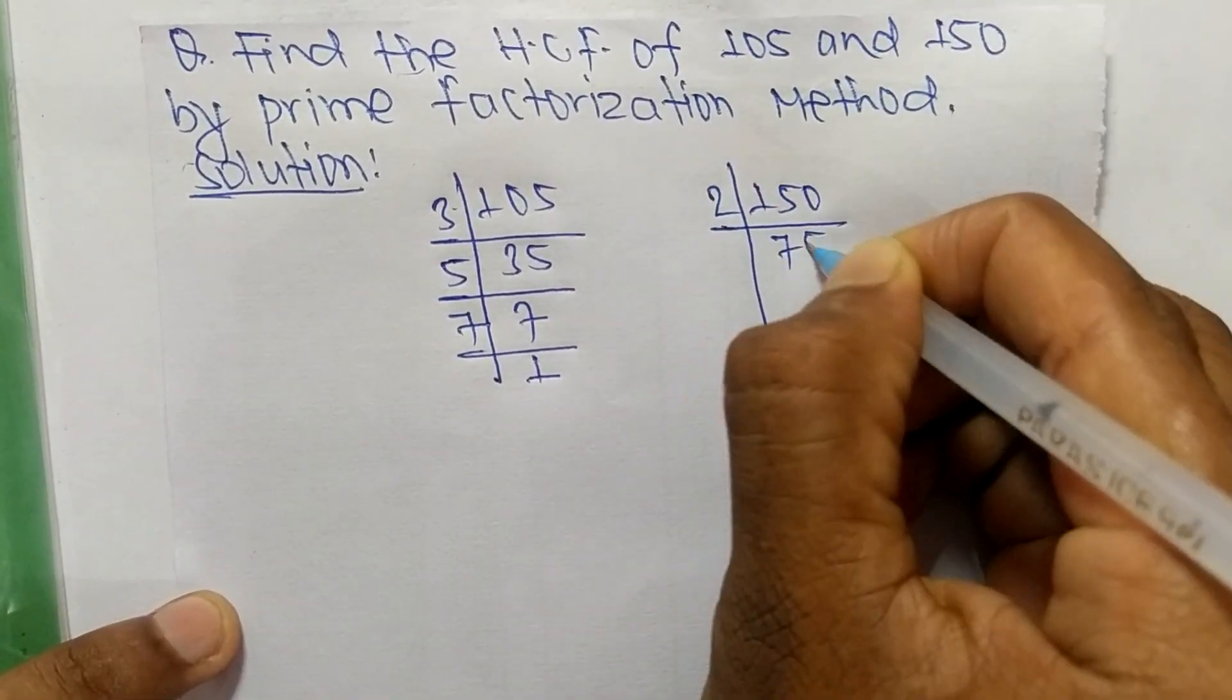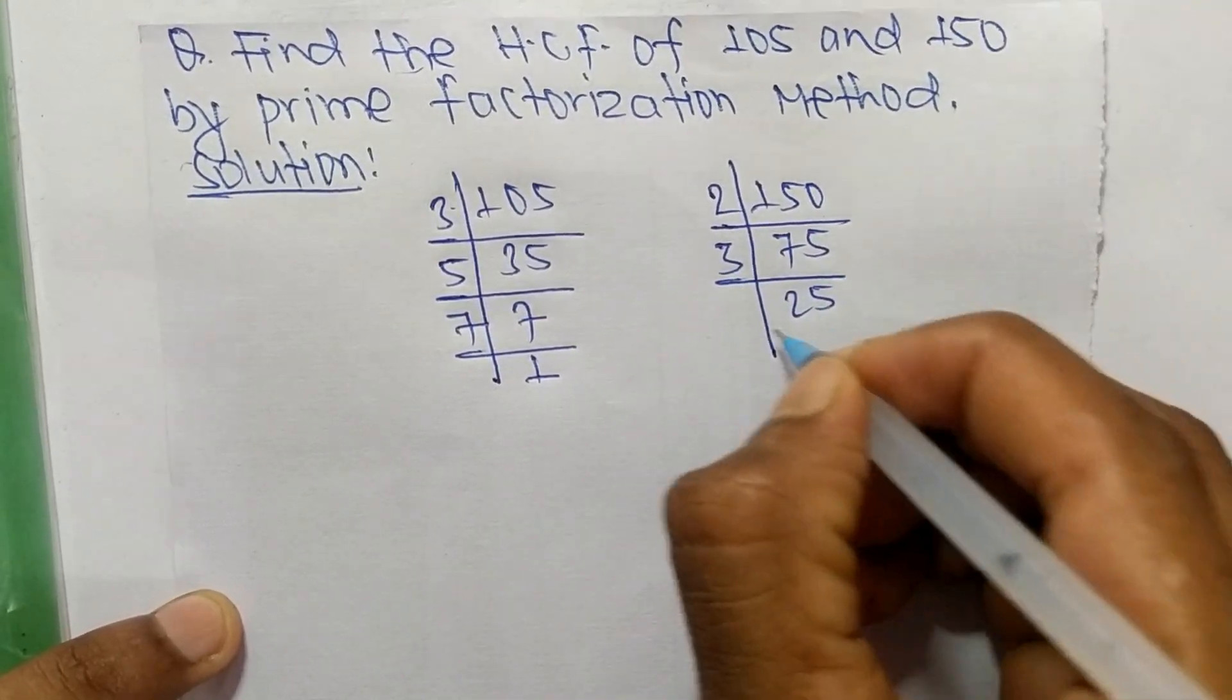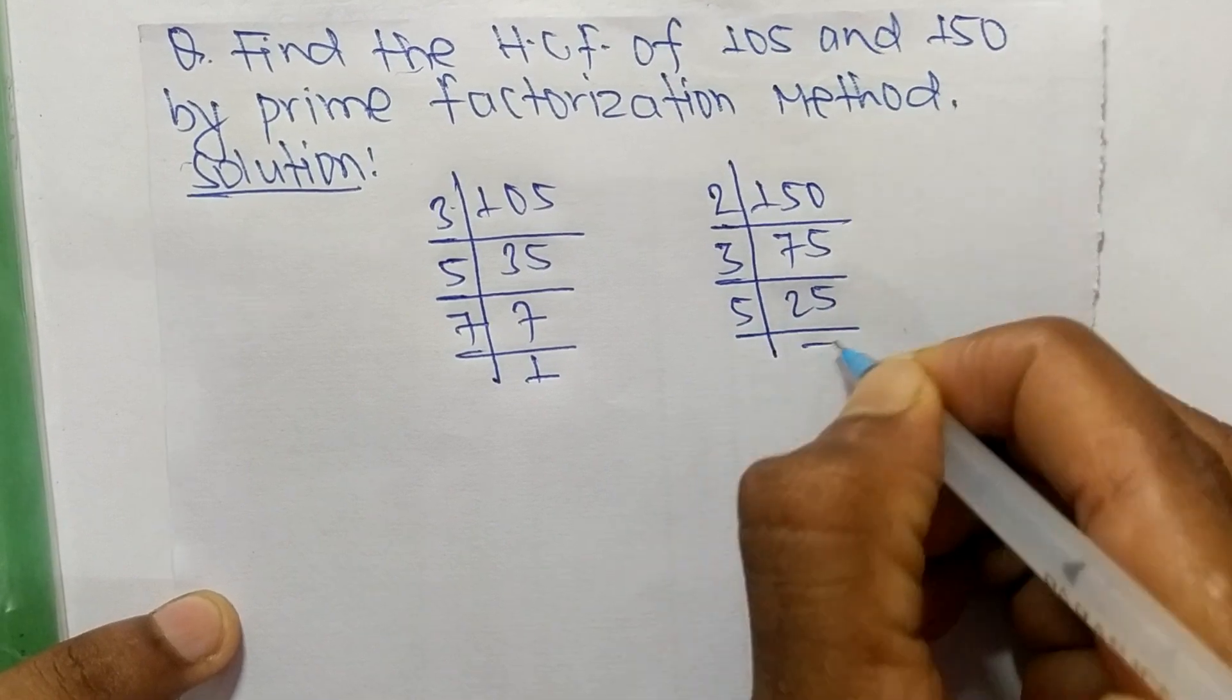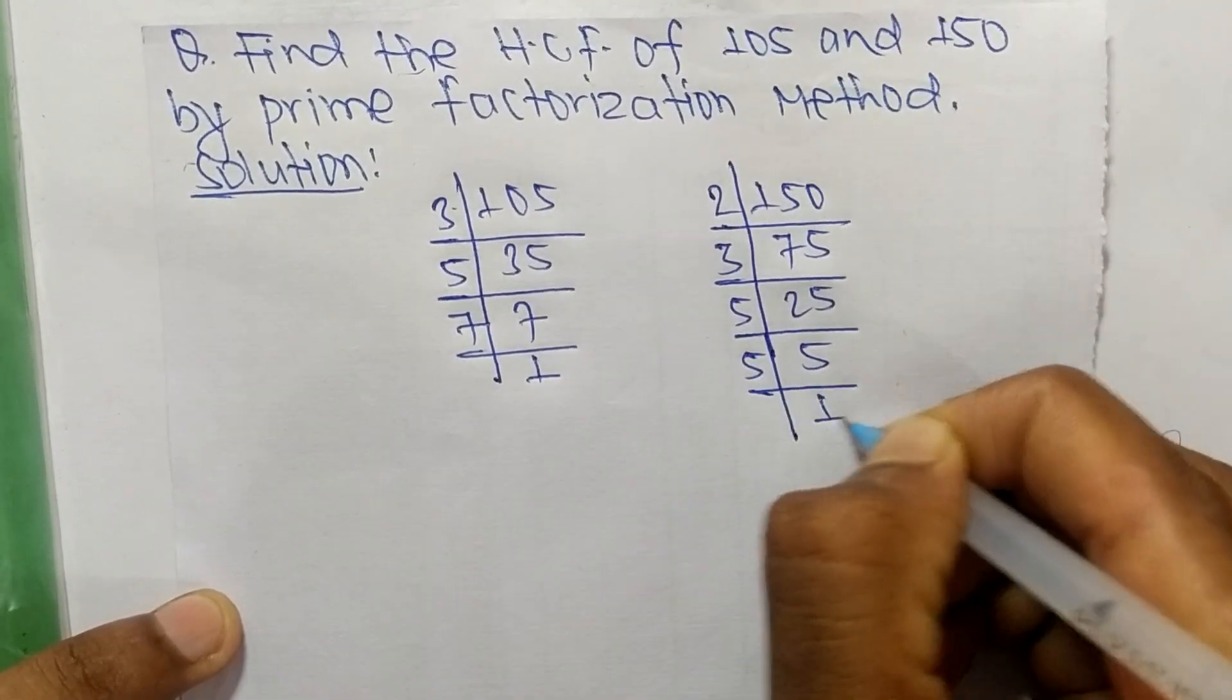3 times 25 equals 75, 5 times 5 equals 25, and 5 times 1 equals 5.